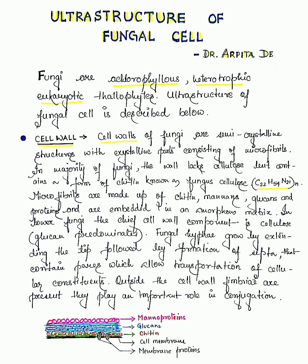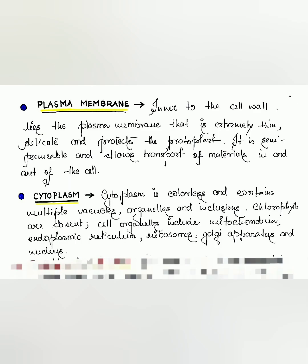If you take a look at the diagram, you will understand the basic structure of the cell wall. Next, coming to the plasma membrane: inner to the cell wall lies the plasma membrane, or cell membrane, that is extremely thin and delicate and protects the protoplast. It is the living part of the cell. It is semi-permeable and allows transport of materials in and out of the cell.